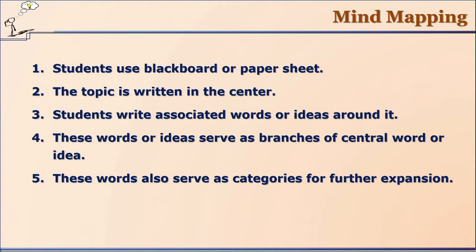For every sub-branch, there would be some kind of idea. Students write associated words or ideas in those branches or sub-branches. The branches can be called categories, and it is easier at the evaluation stage to assess those ideas on the basis of some kind of criteria, since ideas are already organized by category.